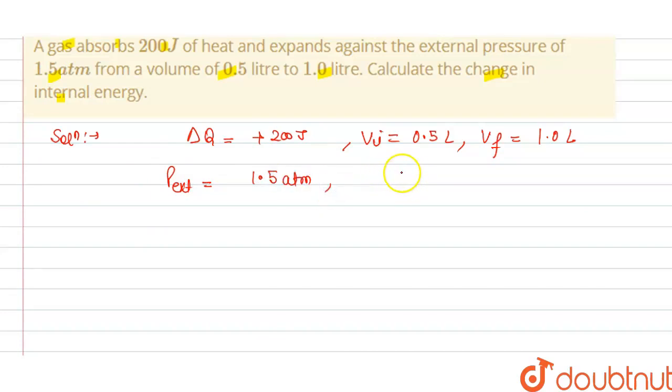So we have the delta U is equal to delta Q plus delta W that is the work done. We have the delta W work done is minus external pressure multiplied by change in volume.